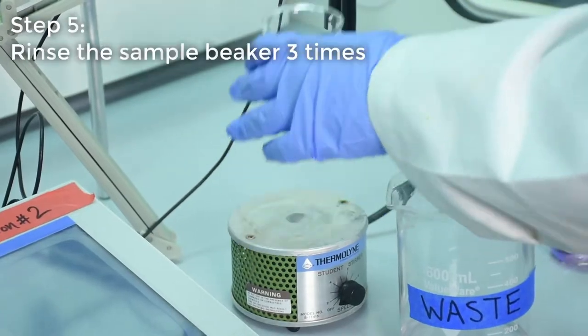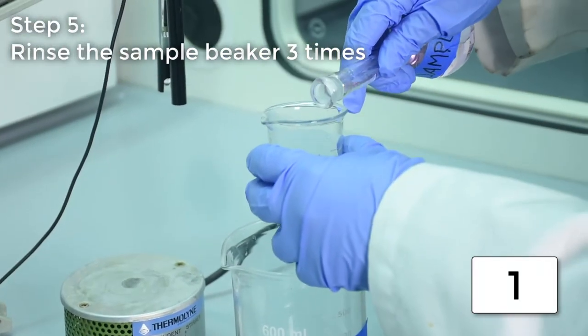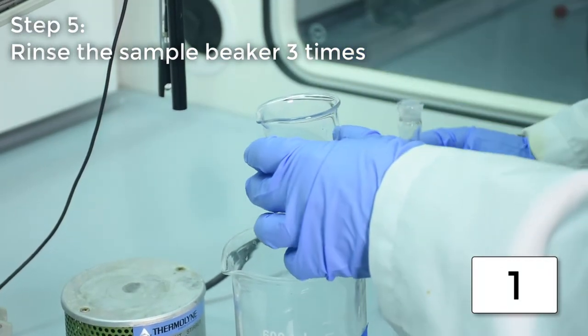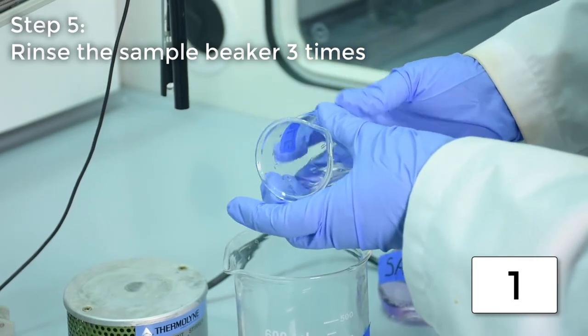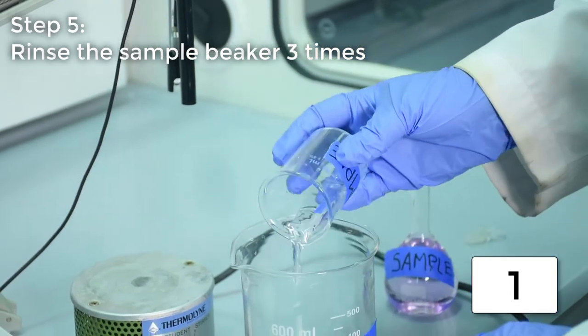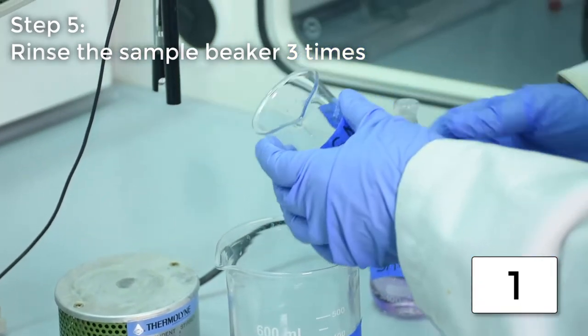Before measuring a standard or sample, rinse the beaker three times with a small amount of the solution being measured. Tilt the beaker to ensure the whole inner surface has been rinsed and pour out the rinses into a waste beaker.